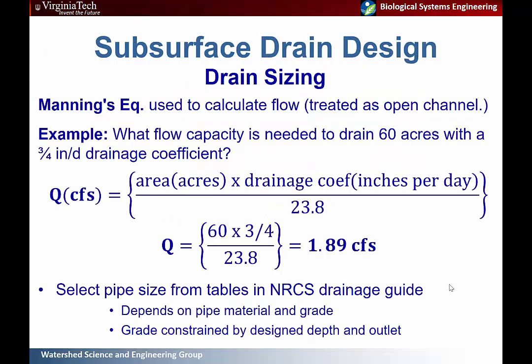Drain sizing is driven by the volume of your system. There's a simple equation based on the drainage area and drainage coefficient divided by a constant to determine cubic feet per second flowing through your system. Then you can go to the NRCS drainage guide — depending on your pipe material and the grade you select — to find the diameter required to accommodate these flows. The pipe material matters because roughness affects water velocity.